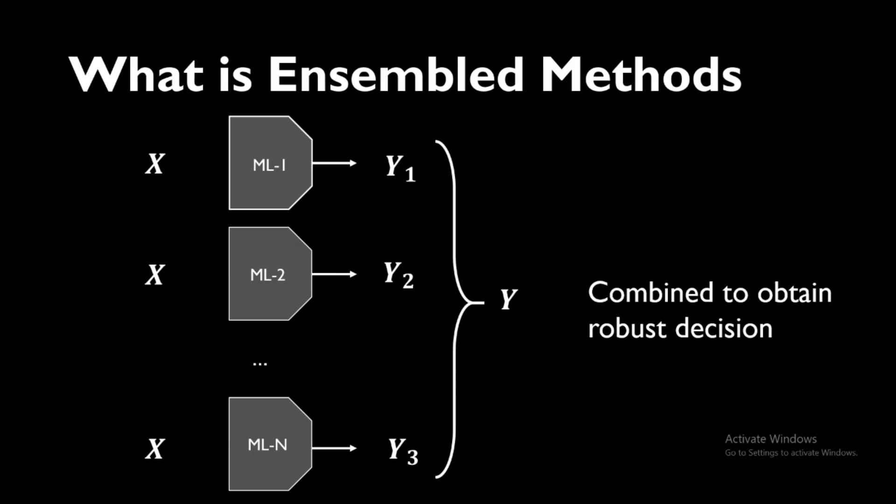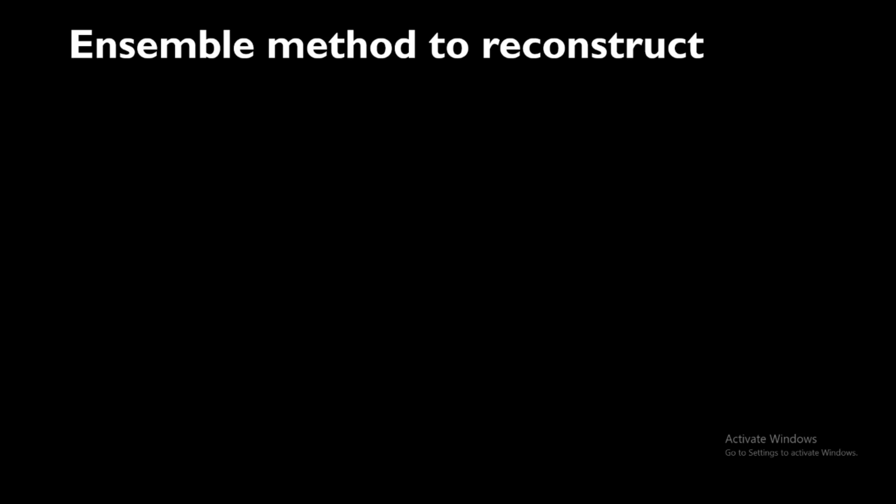So how can we use the ensemble method in an unsupervised way? We need an input x and we need to reconstruct this x so that we can calculate the reconstruction loss. According to the thresholding approach we've been following throughout this series, if the reconstruction error is higher than the threshold, we flag it as an anomaly.